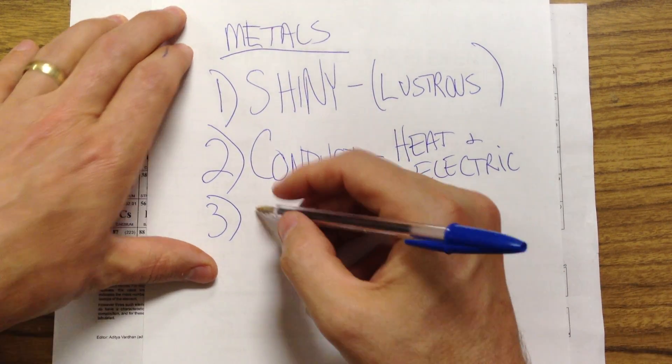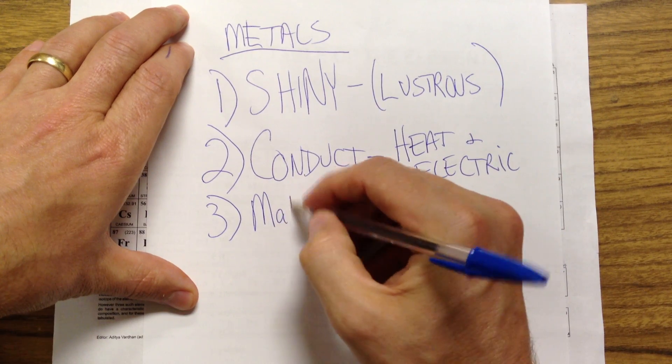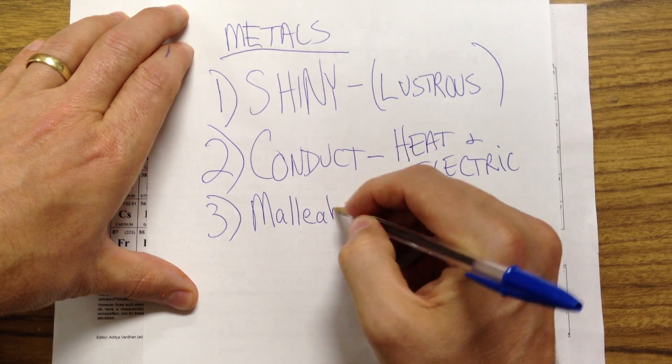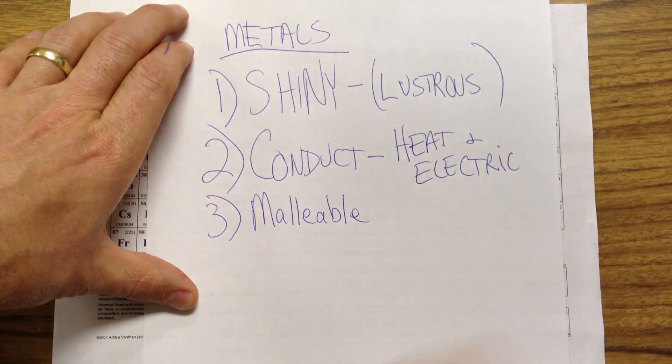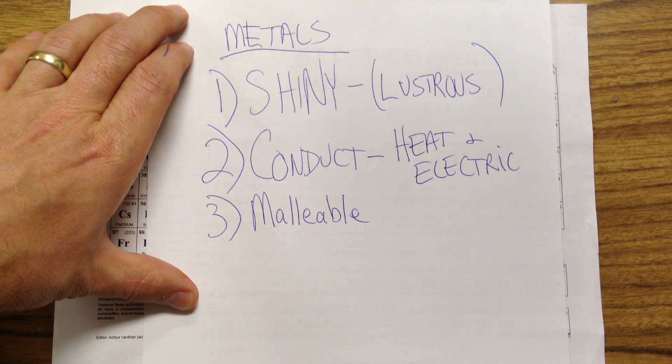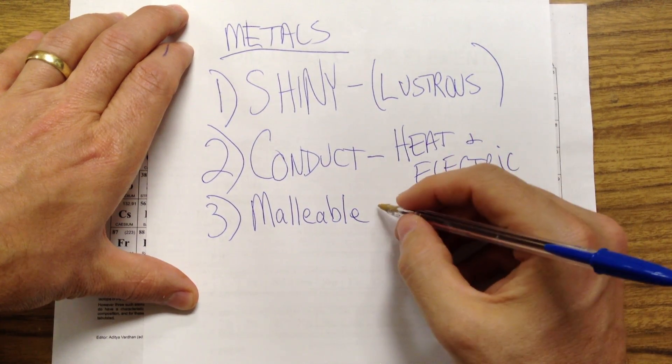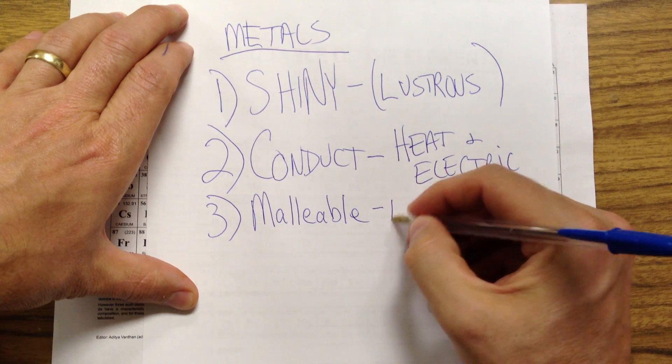Metals are also malleable. The technical definition of malleable is that you can hammer it into a thin sheet.